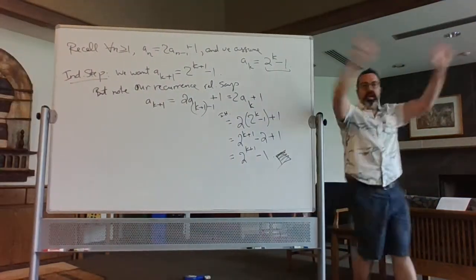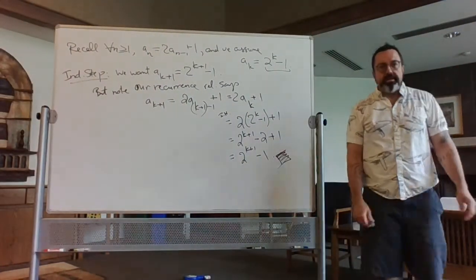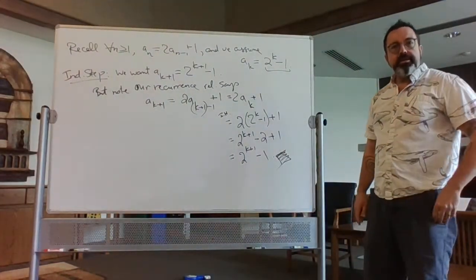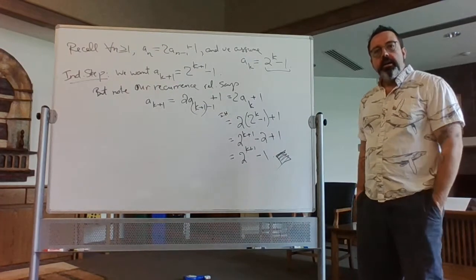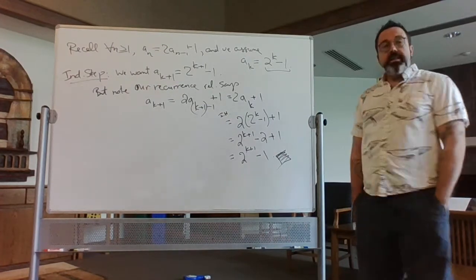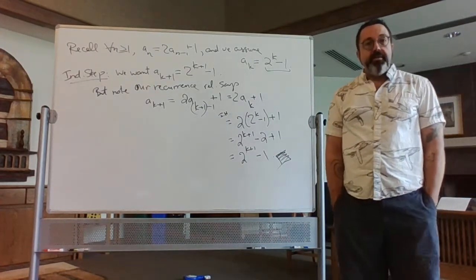To reiterate: we started with a recurrence relation giving rise to a sequence, iterated a few times using the method of iteration, and that gave rise to a conjectural formula. We looked at these values and said they look like powers of two minus one. We took that as our conjecture and then used induction to prove it. That's a good example of the method of iteration.